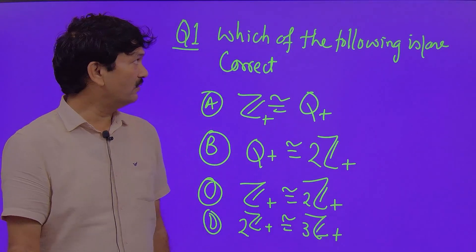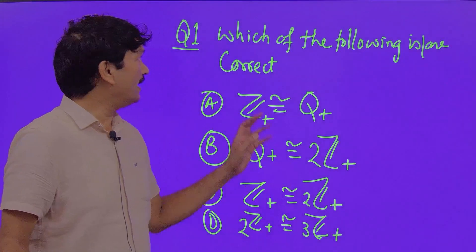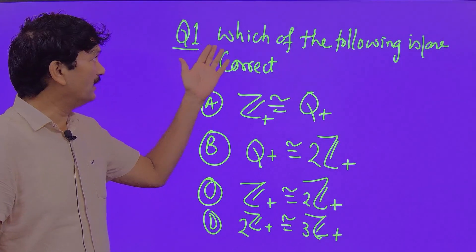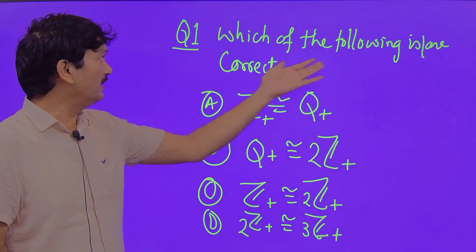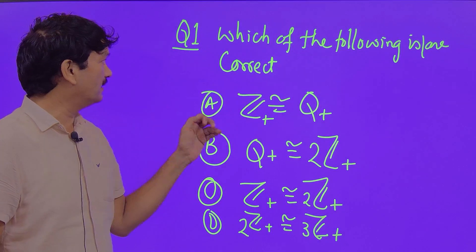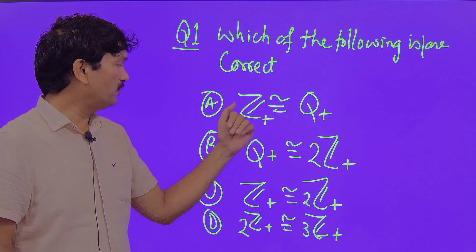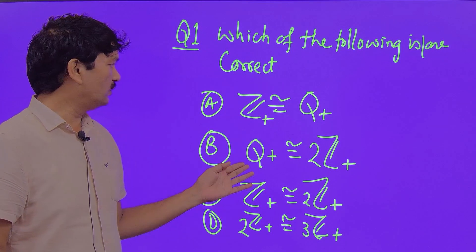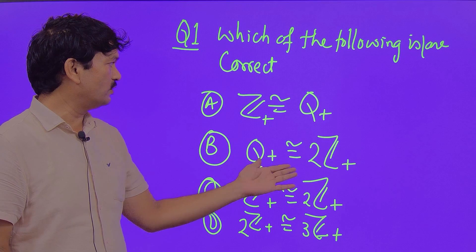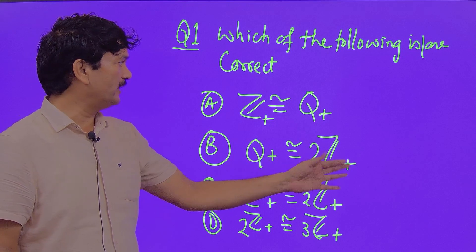Hi everyone, question of the day from group theory: which of the following is/are correct? Z+ is isomorphic to Q+, Q+ is isomorphic to 2Z+.